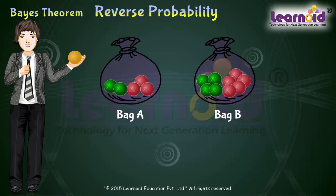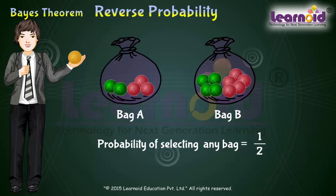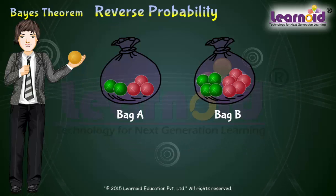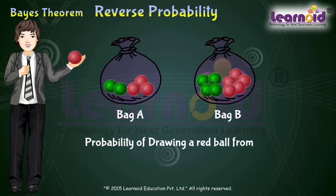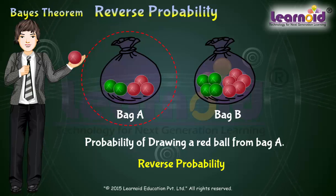We can easily find probability of selecting any of the bag. Also, we can easily find the probability of drawing a ball of particular color if we know the bag. But can we find the probability that red ball is drawn from a particular bag? Say, bag A. In this case, we have to find reverse probability of bag A to be selected when a color of ball is known.